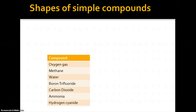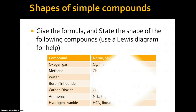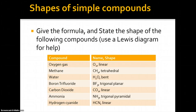Now let's look at the shapes of these compounds. Pause the video and determine the shapes. Oxygen gas (O2) is linear; methane (CH4) is tetrahedral; water (H2O) is bent; boron trifluoride (BF3) is trigonal planar; carbon dioxide (CO2) is linear; ammonia (NH3) is trigonal pyramidal; hydrogen cyanide (HCN) is linear. A Lewis diagram is very useful here — it helps apply the octet rule and lets you count lone pairs. Remember, lone pairs do not participate in naming the shape; only the nuclei of the atoms determine the shape.